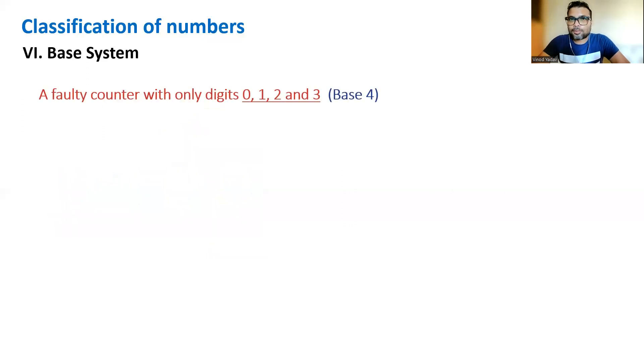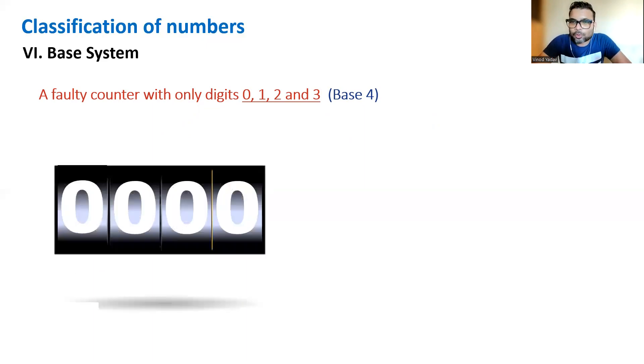Now suppose if we have a faulty counter which has only four digits, zero, one, two, and three, then how will the system of numbers work in that particular cycle? Let's see. Zero, then one, two, three. Will you see digit four? No, digit four is not there. Only base four means four digits are allowed, which four digits? Zero to three. It simply means in base four you can never see digit four. The highest digit will be three only.